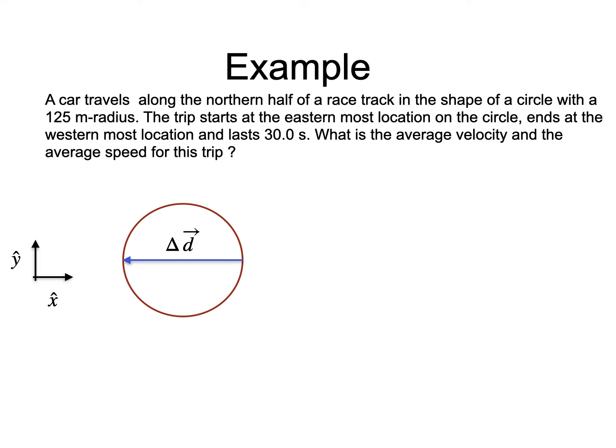It would look like this. The givens are the radius of the circle and the duration of the trip. The average velocity is the ratio of the displacement and the change of time for the trip.